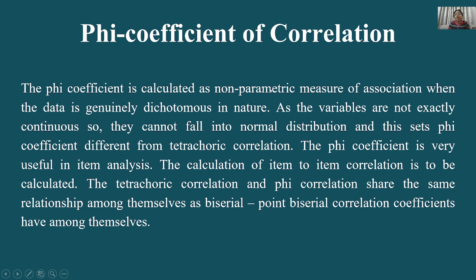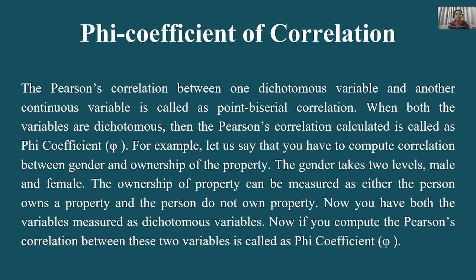Phi coefficient is very useful in item analysis — the calculation of item-to-item correlation. The tetrachoric and phi coefficient correlation share the same relationship among themselves as biserial and point biserial correlation coefficients have among themselves. इस तरह tetrachoric और phi लगभग उसी तरीके का relationship आपस में share करते हैं जैसे biserial और point biserial।